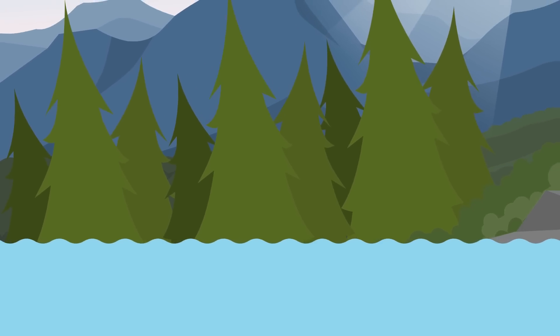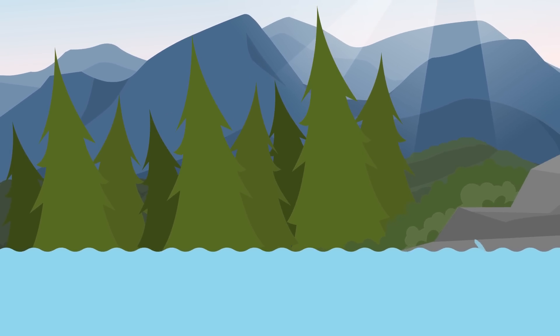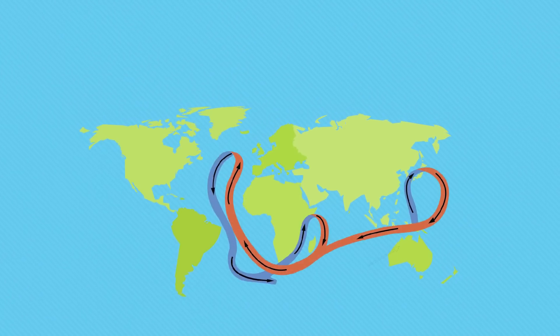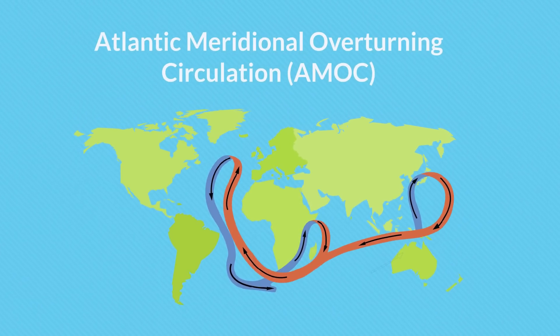The cooler, saltier water sinks and the dense water then flows southwards before it eventually rises back to the surface in the Southern Ocean and also the tropical oceans.